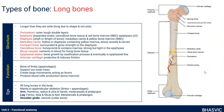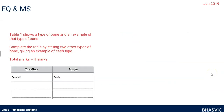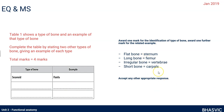Let's look at a couple of exam questions. The first shows a table with the sesamoid bone type and the patella as its example. You need to complete the table by stating two other types of bones and examples of them. Any two other types with appropriate examples earns you full marks. For instance, any long bone example, tarsals for short bones, or cranial bones for flat bones — any appropriate response will be correct.